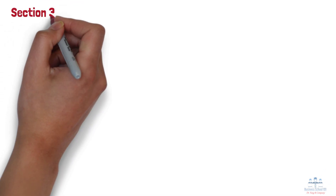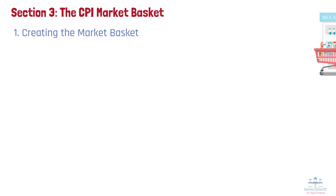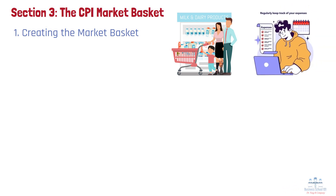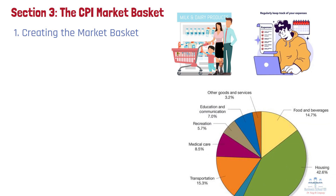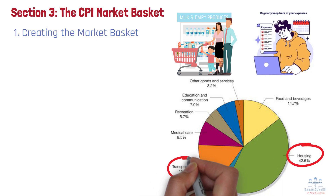Section 3: The CPI Market Basket. Let's look at how the CPI Market Basket is actually constructed. Number 1: Creating the Market Basket. The Bureau of Labor Statistics surveys 14,000 households nationwide about their spending habits. They track exactly what families buy and how much they spend, compiling this into 211 categories of goods and services. The basket represents what a typical urban family of four purchases. About 75% of the typical market basket consists of just three categories: housing, transportation, and food.